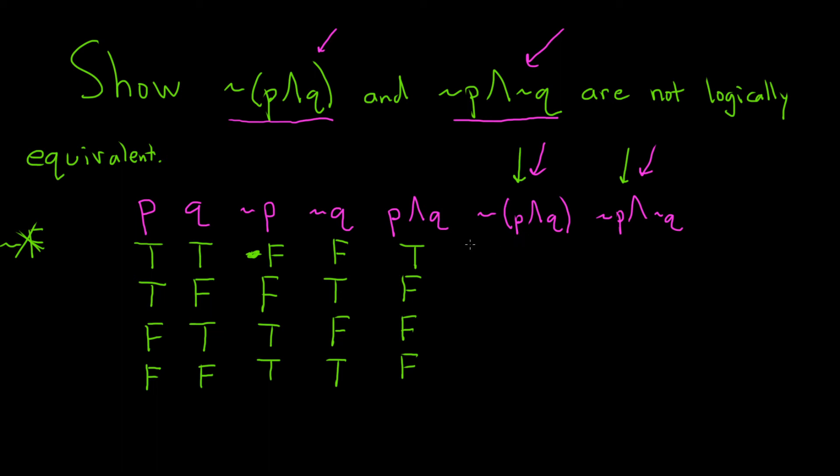For ~(p∧q), you just take your p∧q column and then you just switch the truth value. So true becomes false. And the rest of them are false, so they all become true.